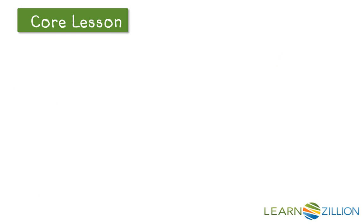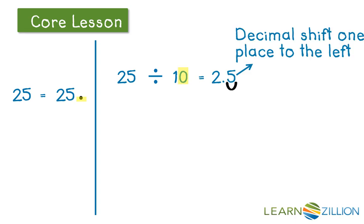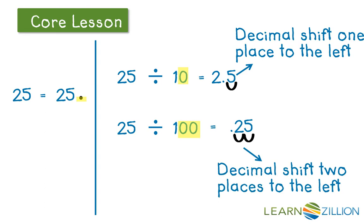We can remember which way to shift the decimal point by remembering that dividing a number into 10 or 100 parts makes smaller numbers. As the decimal point moves to the left, the value of the number becomes less and less. Now let's take a look at our original problem: What is 25 divided by 10 and 25 divided by 100? You do not see a decimal point attached to 25, but there is an imaginary one behind the 5. Here, you see the 2 moves from the tens place to the ones place, and the 5 moves from the ones place to the tenths place.